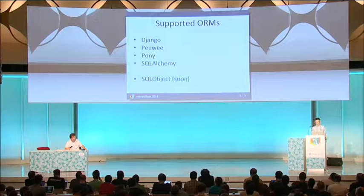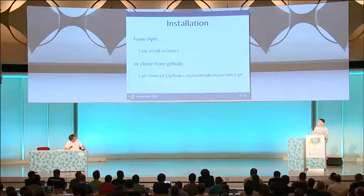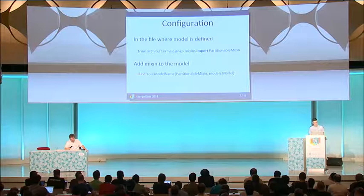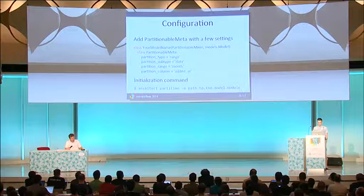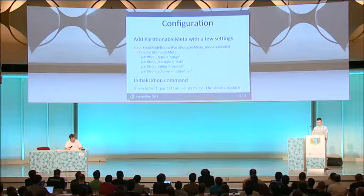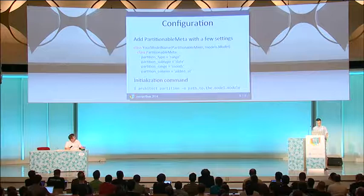Installation is as usual from PyPI. It's very easy to use and configure: you just import a partitionable mixin for the needed ORM and add it to the model — this is a Django example, but it can be Peewee, Pony, or SQLAlchemy. Then you add a partitionable meta class with settings for the model, and run a special initialization command which inserts triggers and other database structures. And that's all — every record will then be inserted into the respective partition for the needed month, absolutely automatically.